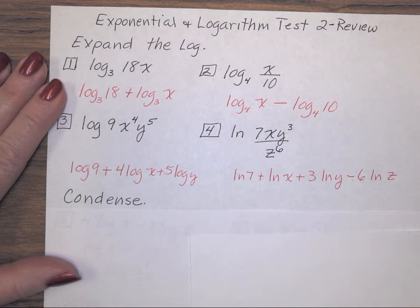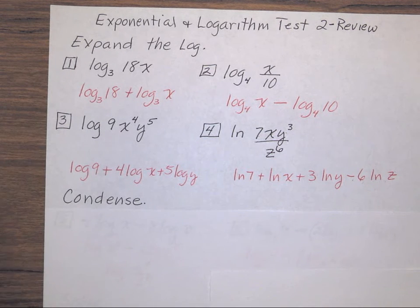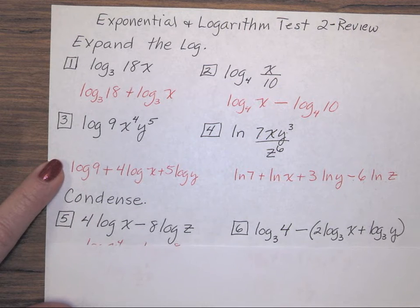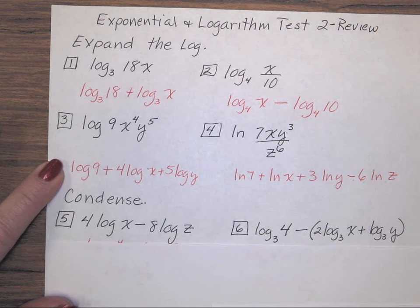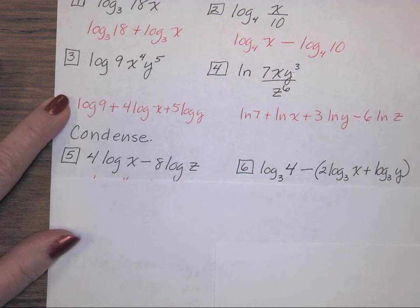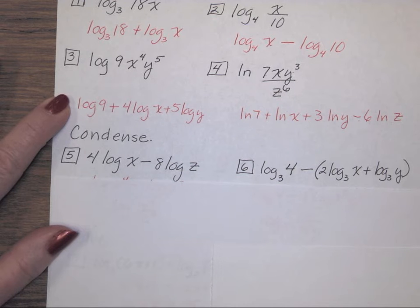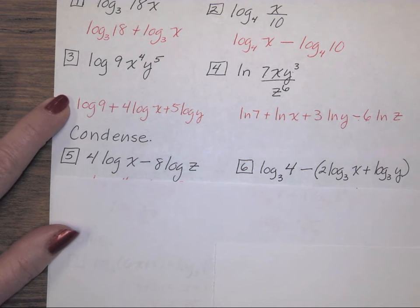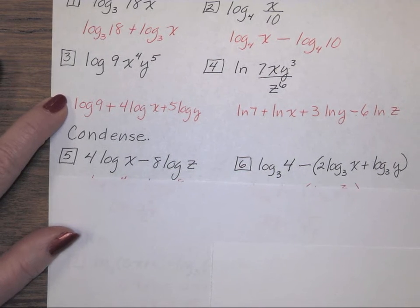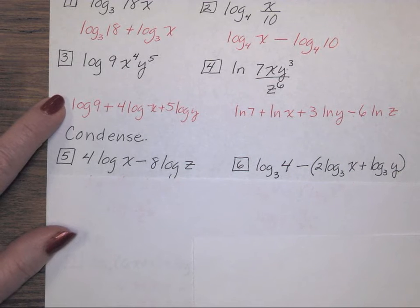Now we're going to do the opposite. We're going to condense some logs. So number 5 is 4 times log base 10 of x minus 8 times log base 10 of z. For number 6, log base 3 of 4 minus, in parentheses, 2 times log base 3 of x, plus log base 3 of y, close parentheses. Be careful on number 6. Again, try it on your own, and we'll look at it together.